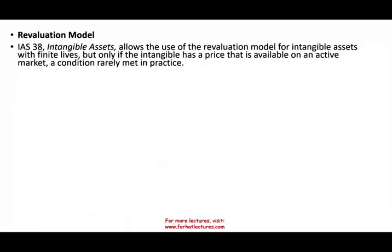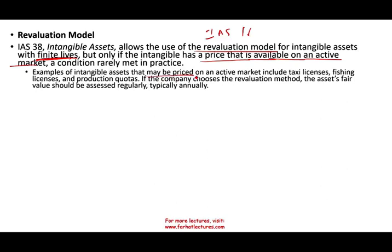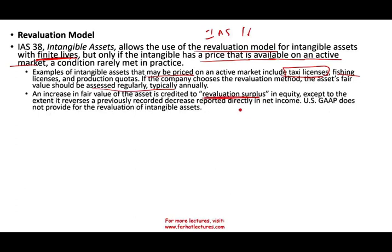On the revaluation model: IAS 38 allows the use of the revaluation model, which is very similar to IAS 16, for intangible assets with finite life — but only if the intangible has a price available on an active market, which is very rare. Examples of intangibles that may be priced on an active market include taxi licenses, fishing licenses, and production quotas. If a company chooses the revaluation model, the asset's fair value must be assessed on a regular basis. Any increase in fair value is credited to revaluation surplus — it goes into OCI and equity — except to the extent it reverses a previously recorded decrease reported in net income.